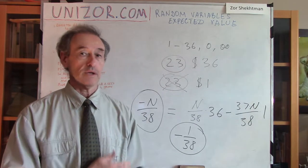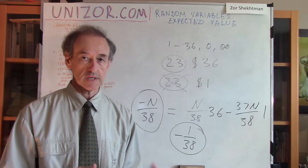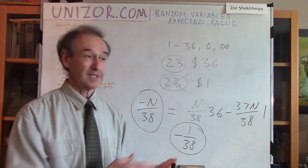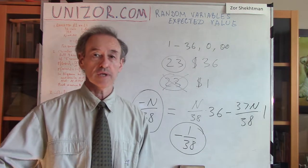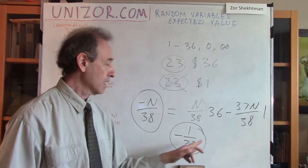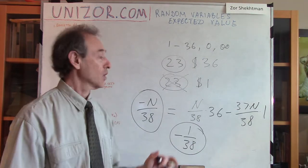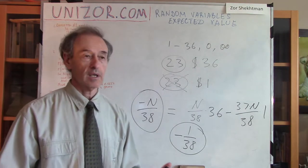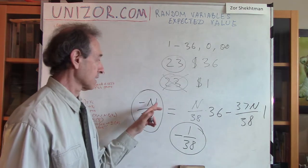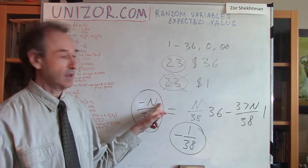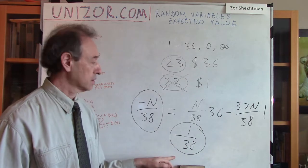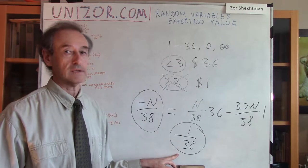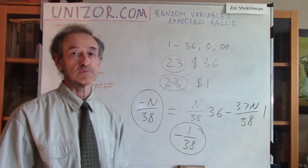The average is not necessarily something which really occurs. If you bet a dollar, you either lose a dollar or you win 36 dollars — you will never lose 1/38 of a dollar. But among many games, averaged by the number of games, that would be the result with the number of games relatively large. Mathematically, if n tends to infinity, the average per game would tend to minus 1/38.